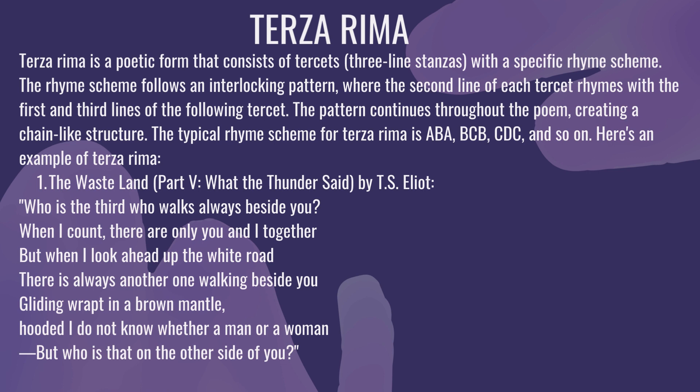The first line of a stanza will be rhyming with the third line, and the middle line will be rhyming with the next stanza's lines. For example, the middle line will rhyme with the lines of the following tercet.